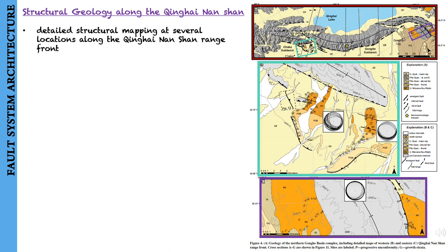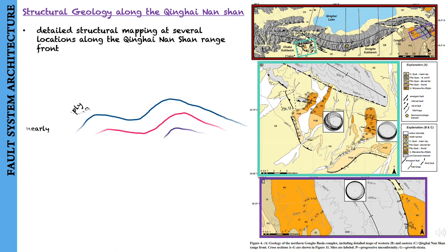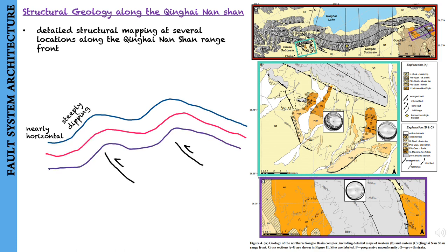Generally, Cenozoic strata are steeply dipping along the range front and dip angles decrease toward the basin, where strata are nearly horizontal.